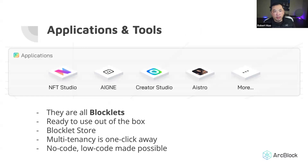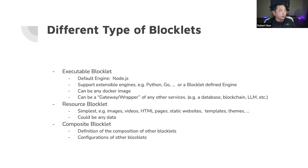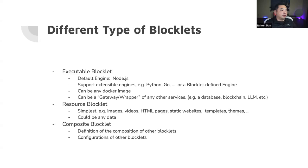The reason most applications are composite blocklets is based on our software Lego design. For example, this NFT studio or this agent — they are very full-functional pieces of software, but it's not necessary to rebuild everything from scratch. They're actually reusing a bunch of other blocklets. The developer does not need to rebuild. But you want to give users a final experience that includes not only key features but also the webpage, FAQs, documentation — put all of them together into a full software package. That's why composite blocklets come in. Those are the three major types of blocklets.